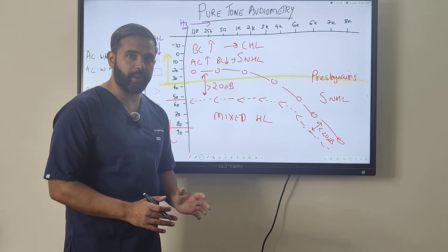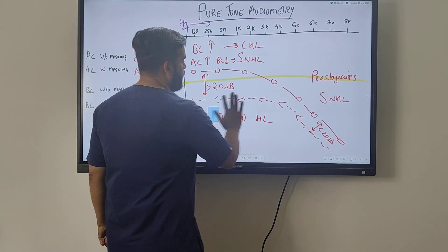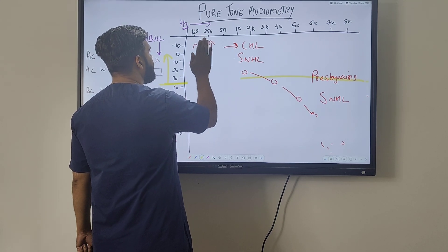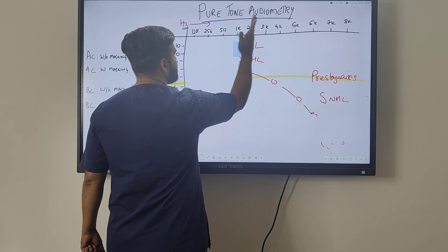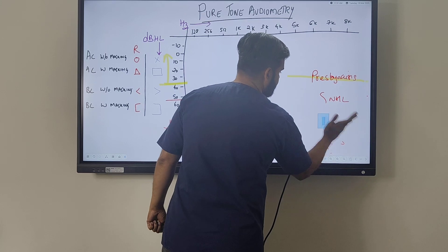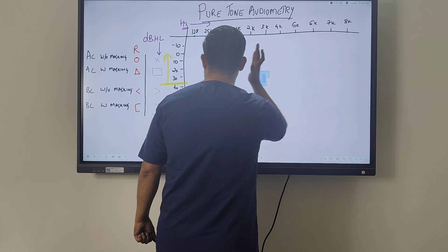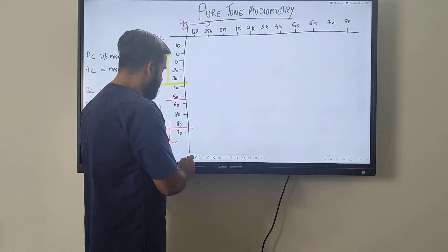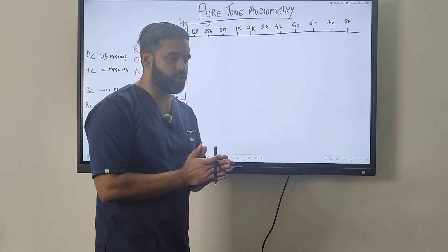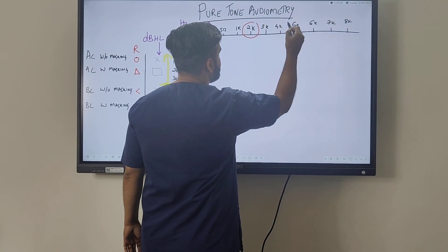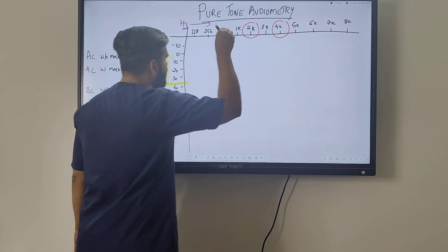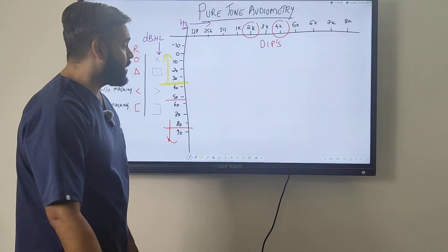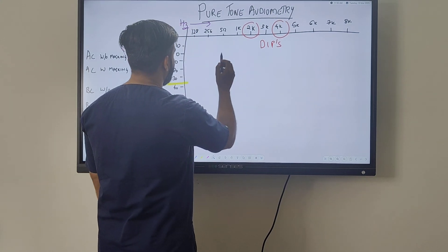Tympanogram is the name of the report from tympanometry, just as audiogram is the report from audiometry. There are classical audiogram patterns examiners ask about. Two important dips to know are at 2k Hz and 4k Hz, which appear very classically in certain conditions.